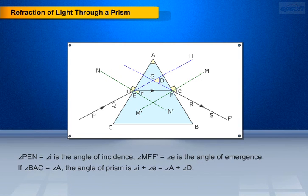Angle PEN equals angle i, is the angle of incidence. Angle MFF' equals angle e, is the angle of emergence. If angle BAC equals angle A, the angle of prism is angle i plus angle e equals angle A plus angle D.